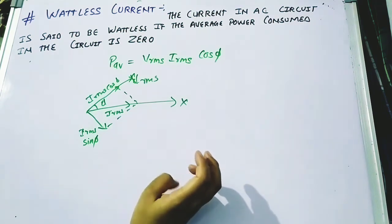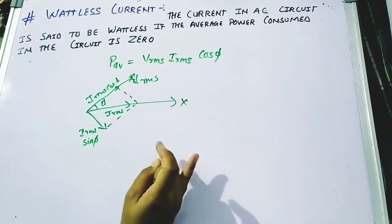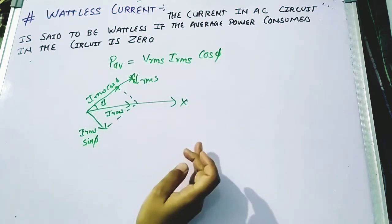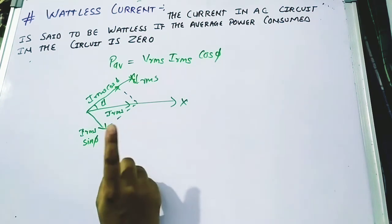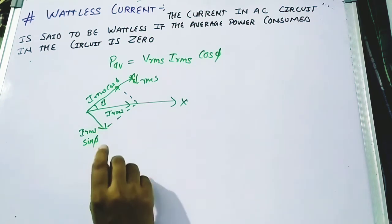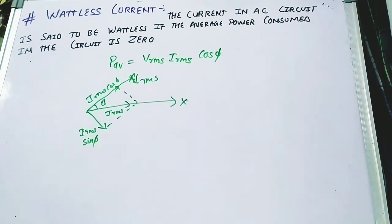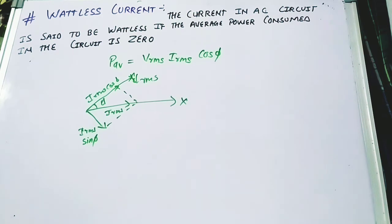This is because of purely capacitive and inductive circuits, where the voltage and current differ by an angle of π/2. Therefore, the current over the circuit has no power, and that current is what we call the wattless current.